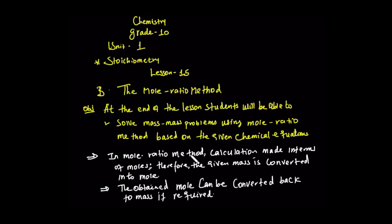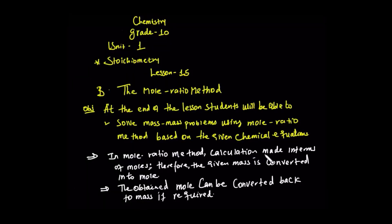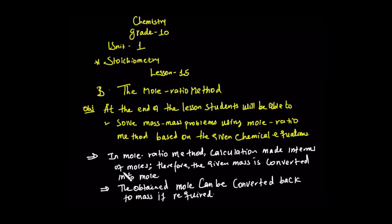In mole ratio method, that means to solve mass-mass relationships, calculation needs to be done in terms of moles. Therefore, the given mass is converted into moles. The given mass is equal to moles.